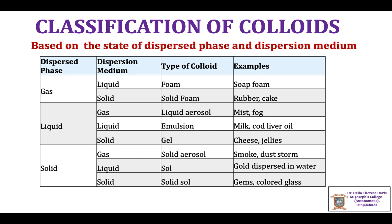Classification of colloids: Colloids are classified into different types based on the state of the dispersed phase and dispersion medium. Another classification is based on the affinity between the dispersed phase and the dispersion medium. In the third classification, it is based on the nature of the dispersed phase. We will first discuss the classification of colloids based on the physical state of the dispersed phase and dispersion medium.